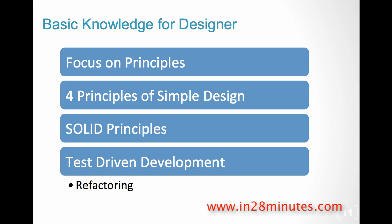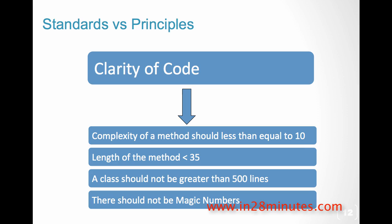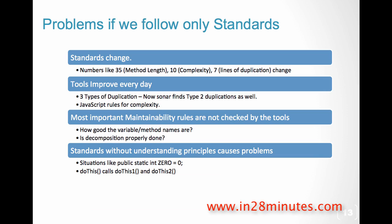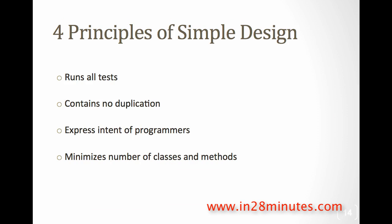Let's look at the important design things to focus on when joining an agile project. The most important things are the four principles of simple design, SOLID principles, and test-driven development. If you follow these three, you're making a good start towards evolutionary design. Identify important principles — clarity of code is a key one. Focus on principles rather than standards. Standards say things like 'cyclomatic complexity of a method should be less than 10,' but a method under 10 doesn't automatically mean it's readable.